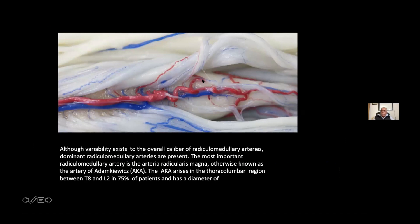A posterior spinal artery on the right side, one on the left side, and a small artery running over the ligamentum terminalis. Variability exists in the overall caliber of radicular medullary arteries. Dominant radicular medullary arteries are present. The most important radicular medullary artery is the arteria radicularis magna, otherwise known as the artery of Adamkiewicz.